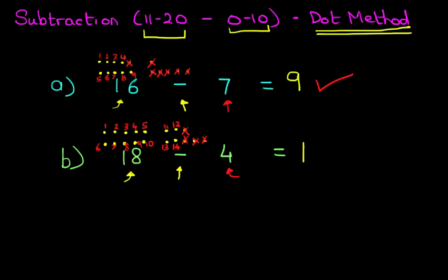That is the answer: 14. We're going to give ourselves a nice big tick. 18 minus 4 equals 14. And we did that using the dot method.